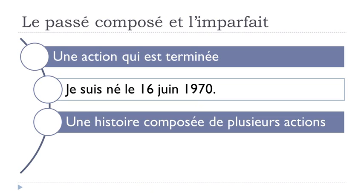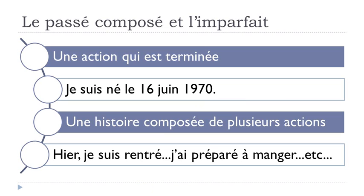Une histoire composée de plusieurs actions — a story made up of several actions. If you've got several actions in a story, you should normally use le passé composé. For instance: hier — yesterday — je suis rentré, I came back home; j'ai préparé à manger, and so on. When you explain to a friend what you did yesterday, you use le passé composé.